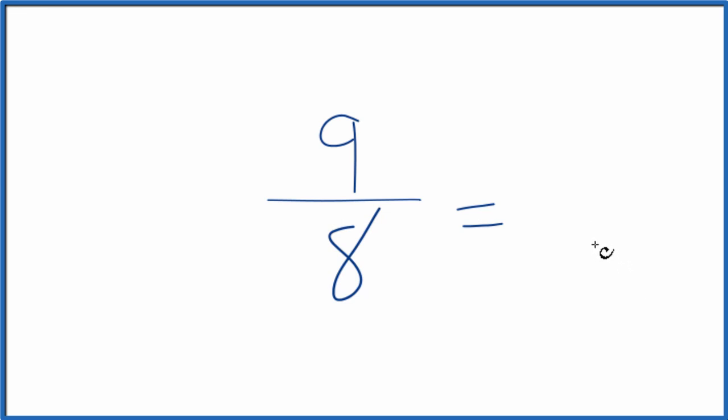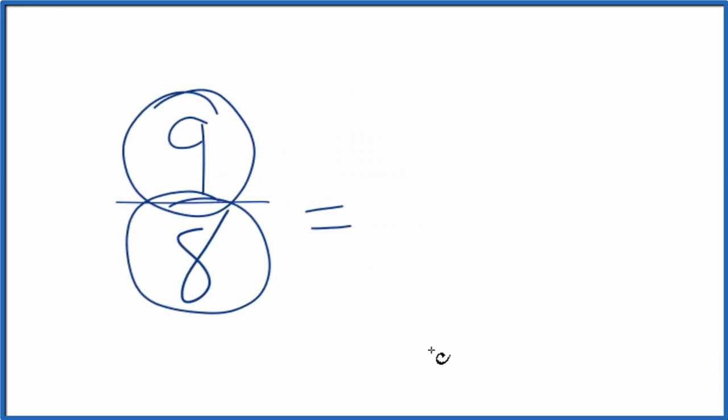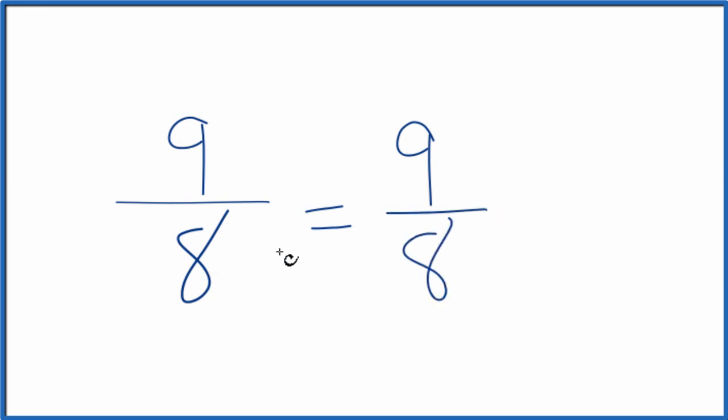So we need to find a common factor, something that goes into 9 and 8 evenly. The thing is, the only factor that will go into 9 and 8 is 1. Divide 9 by 1, we get 9. 8 divided by 1, that's 8. So we really haven't changed anything.